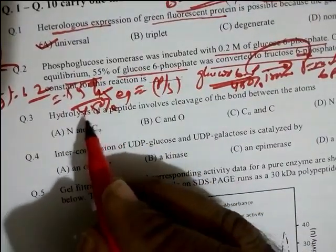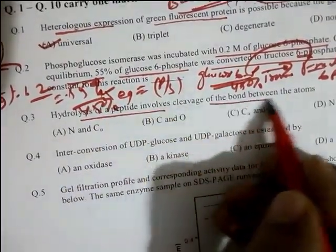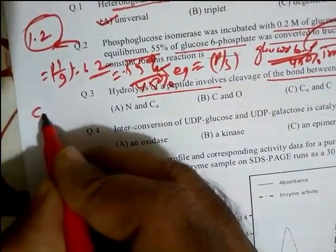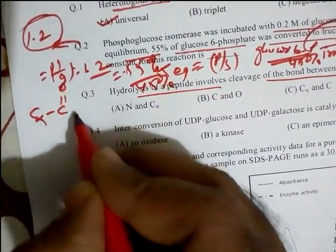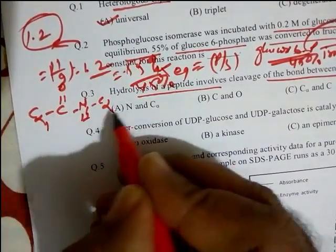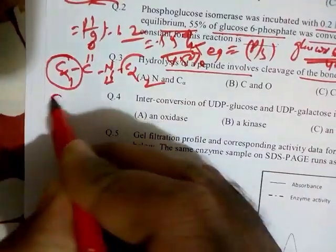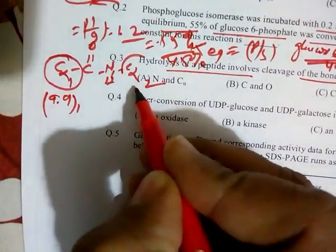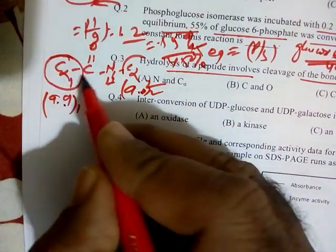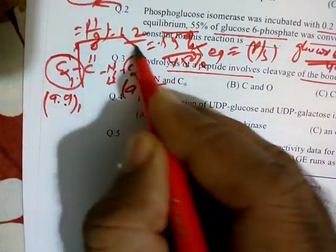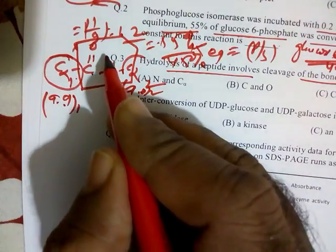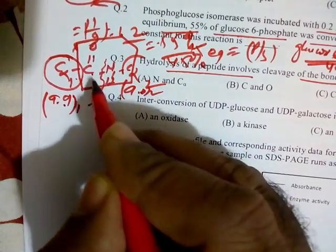Question three: Hydrolysis of a peptide bond involves cleavage of the bond between which atoms? The peptide bond forms between the carbonyl carbon (C=O) of one amino acid and the nitrogen (N-H) of the next. So the bond between C and N is what breaks during peptide bond hydrolysis.